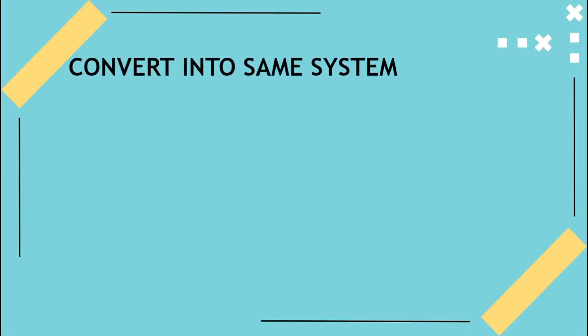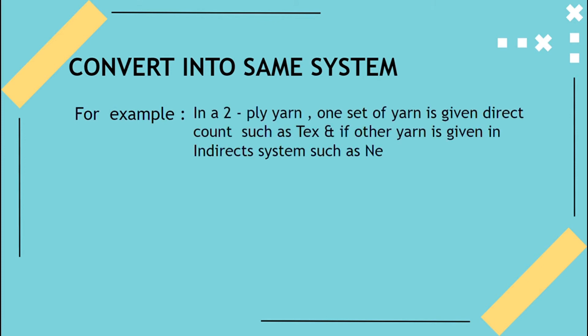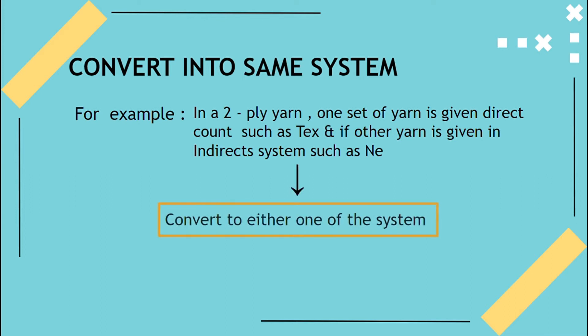Convert into the same system. For example, in a two-ply yarn, if one yarn is given in a direct count such as Tex and the other yarn is given in an indirect system such as Ne, we have to convert to either one system — either from Tex to Ne or from Ne to Tex — so that we can apply the formula.